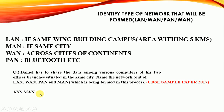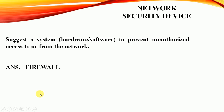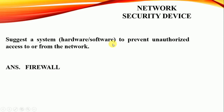The last and very important topic is network security. The question may ask: 'Suggest a hardware/software system to prevent unauthorized access to or from a network.' The answer is firewall. A firewall is a hardware/software system used to prevent unauthorized access to or from a network. This definition can be asked in multiple ways — either given the definition to name the device, or asked to define firewall directly.